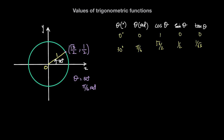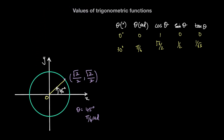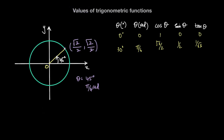The next value of theta is when theta equals 45 degrees. In radians, that's pi over 4 radians, because one fourth of 180 is 45. When theta is 45 degrees, with a radius of one unit, the x-coordinate on the unit circle is square root of 2 over 2, and the y-coordinate is also square root of 2 over 2.